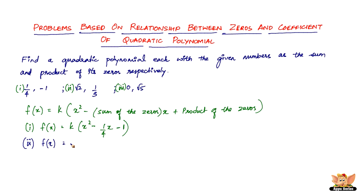The second one: f(x) equals k times x squared, minus root two times x, plus one-by-three. So that is plus one-by-three. This is the required quadratic polynomial for this second set of numbers.